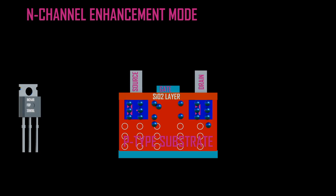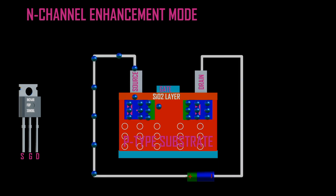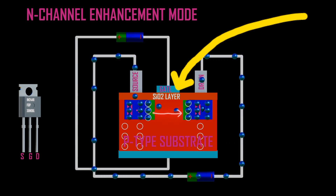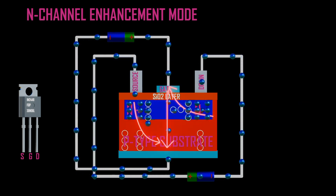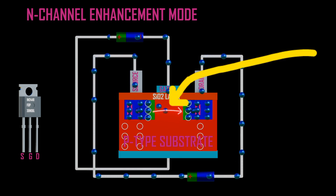Similarly, in N-channel both depletion and enhancement modes take place, but here electrons are majority carriers which facilitate conduction across the channel. At first, when no voltage is applied at the terminals of source and drain, electrons and holes at the junction recombine forming a depletion region. When a voltage is applied between source and drain an electric field is formed facilitating electron flow. When a voltage is applied at the gate, the electric field is formed such that the gate terminal becomes positively charged and the base becomes negatively charged. Substrate holes move towards the base while electrons move towards the gate, filling near the gate and creating a channel with electrons. This increase in electrons at the channel is called enhancement mode.